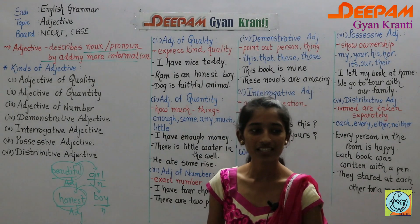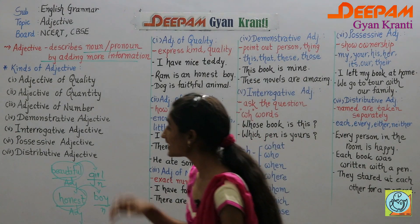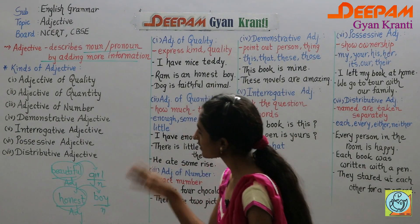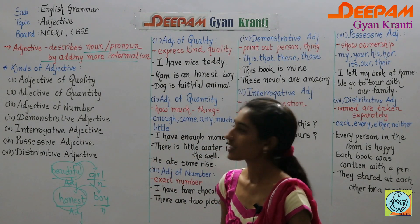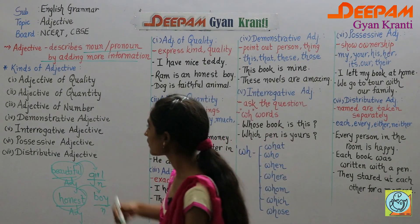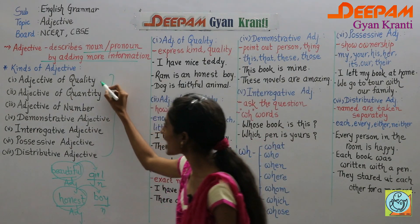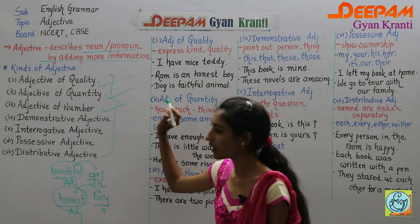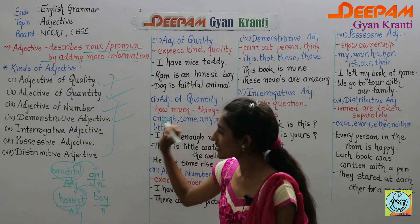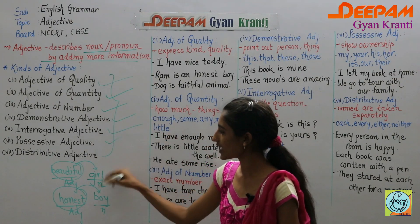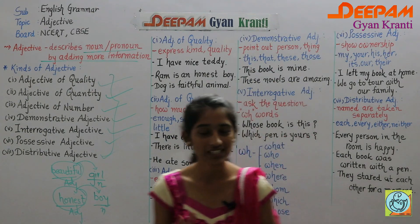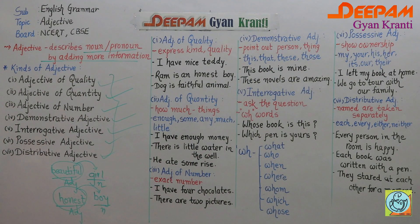Now we are talking about the kinds of adjectives. There are seven kinds of adjectives. Four or five are very important, but we are discussing all the types in this video. The seven kinds are: adjective of quality, adjective of quantity, adjective of number, demonstrative adjective, interrogative adjective, possessive adjective, and distributive adjective.